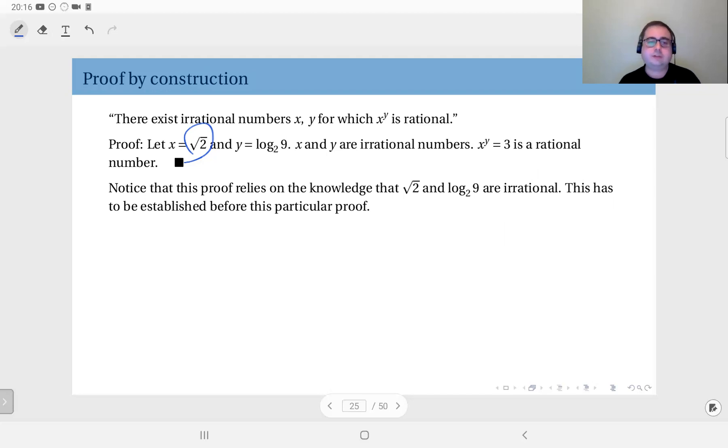Now x and y are irrational numbers, but when you take x to the power y, this gives you square root 2 to the power log base 2 of 9, which gives you 3. This is clearly a rational number, which concludes the proof. Note that this proof relies on the knowledge that square root 2 and log base 2 of 9 are irrational. This has to be established beforehand.